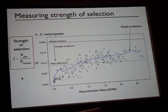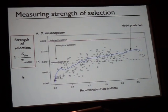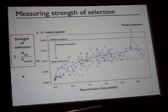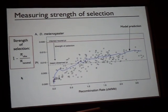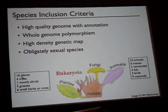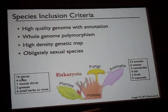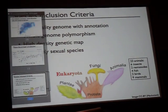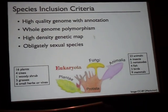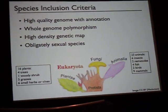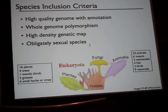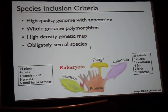We then wanted to take data for as many species of animals and plants as we could, calculate this strength of selection, and ask whether it correlates with population size — which is what we would predict if linked selection is an important process shaping patterns of neutral diversity. To do this we need a high-quality chromosomal-scale genome assembly to estimate recombination rate, a high-density genetic map, whole-genome polymorphism data, and we decided to focus purely on obligately sexual species, because asexual species add additional complications.